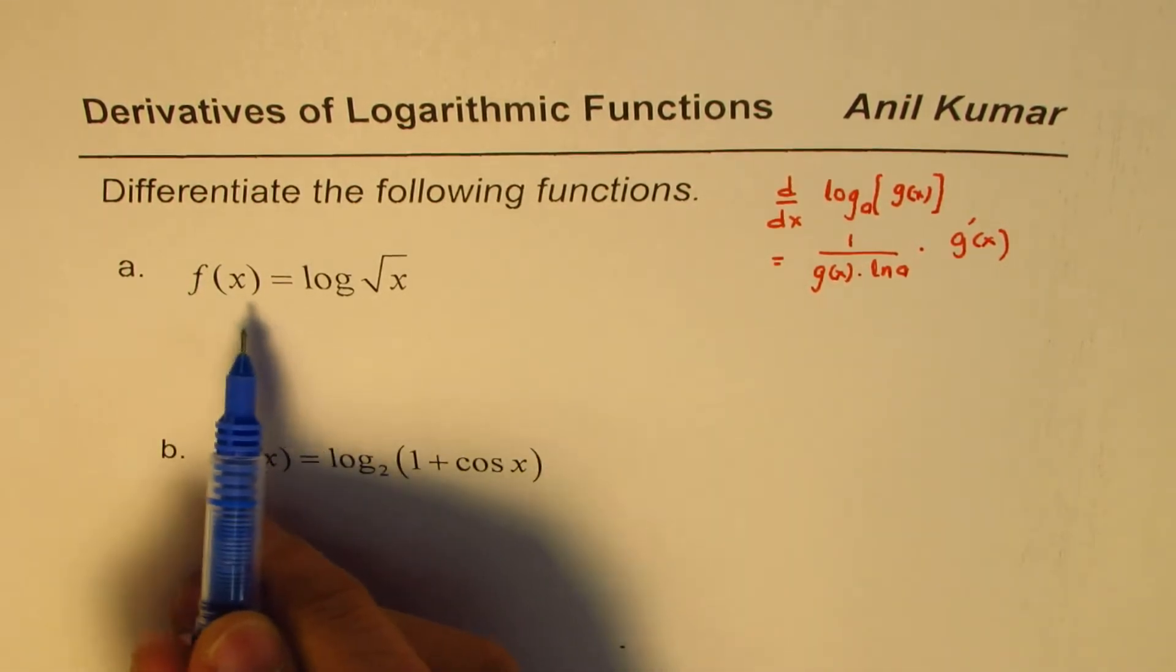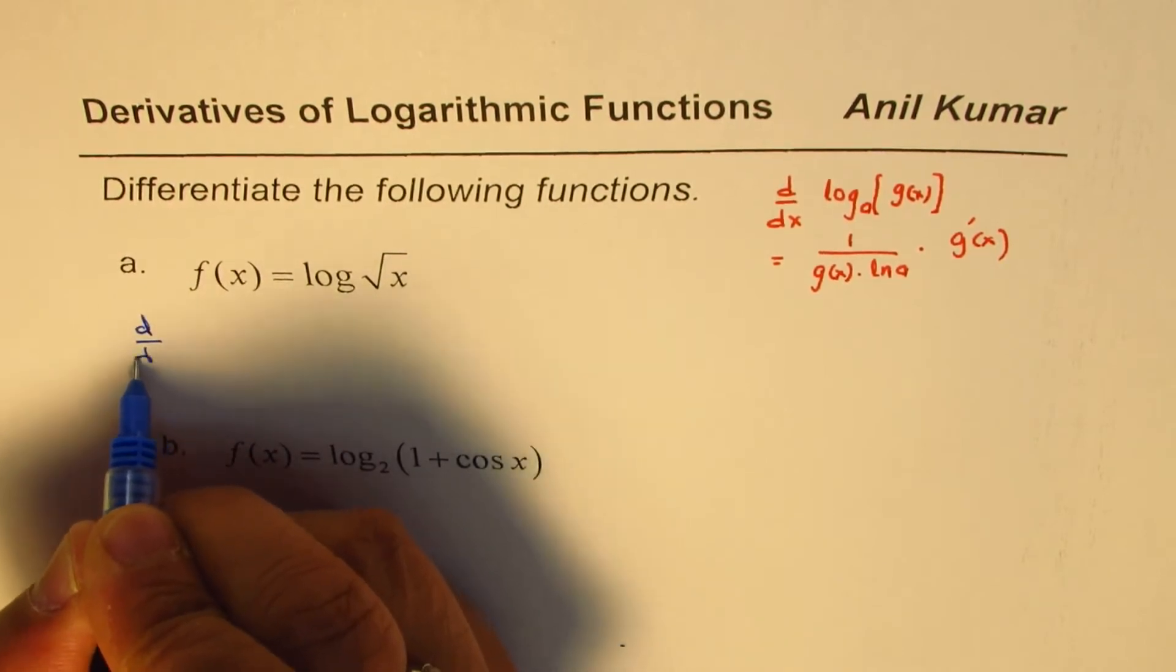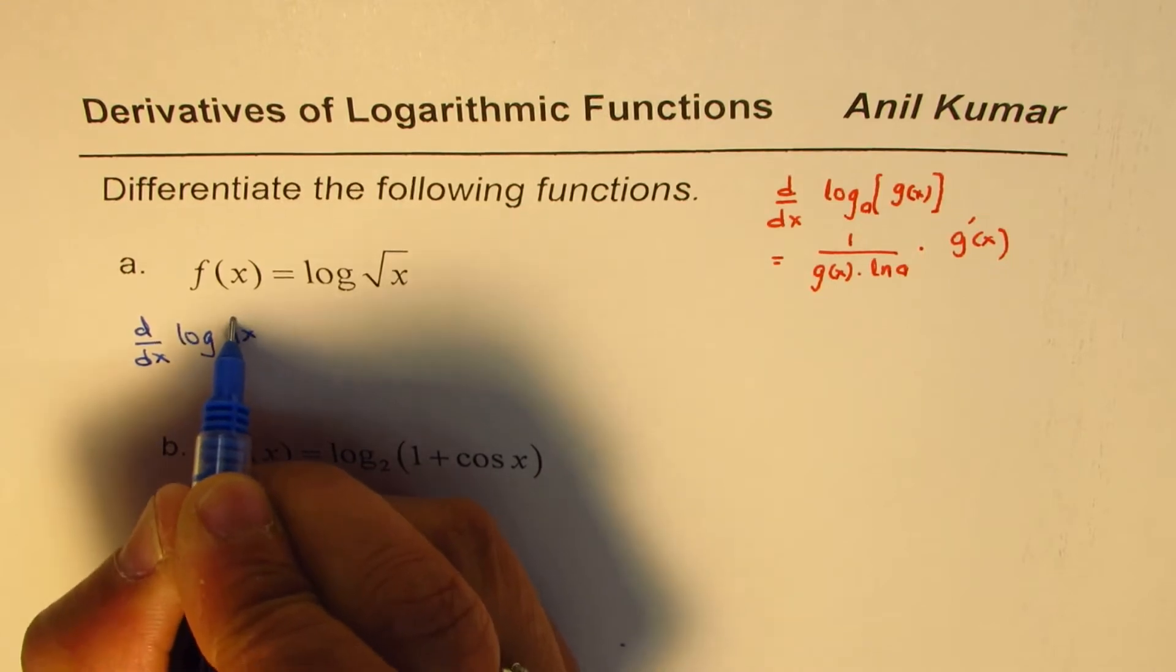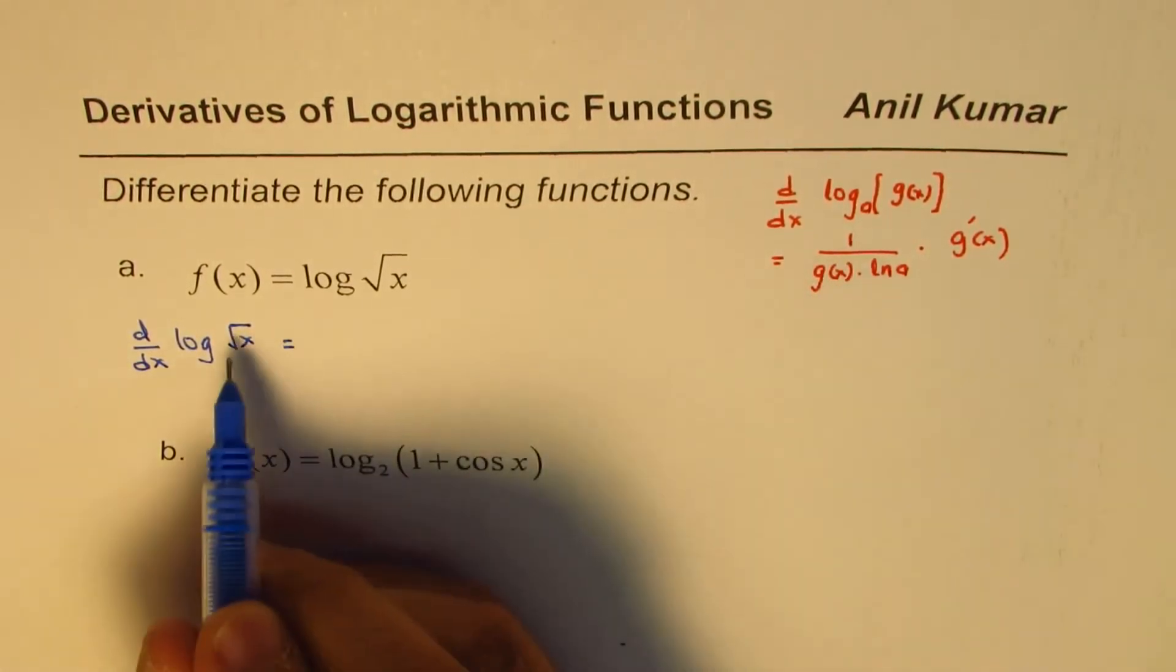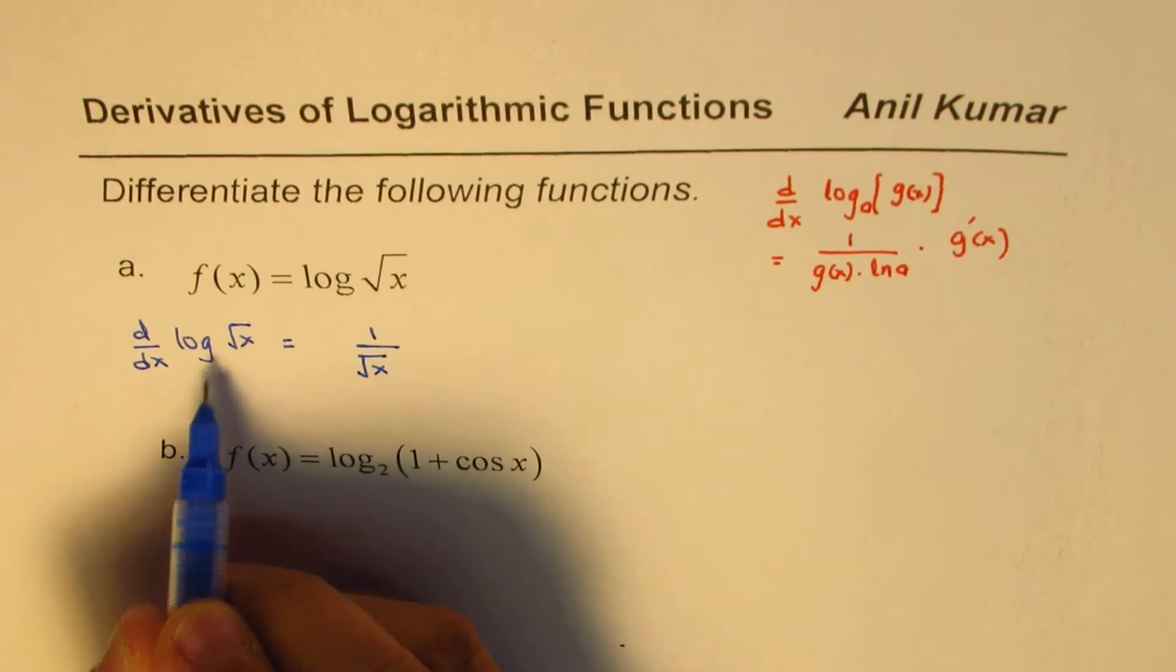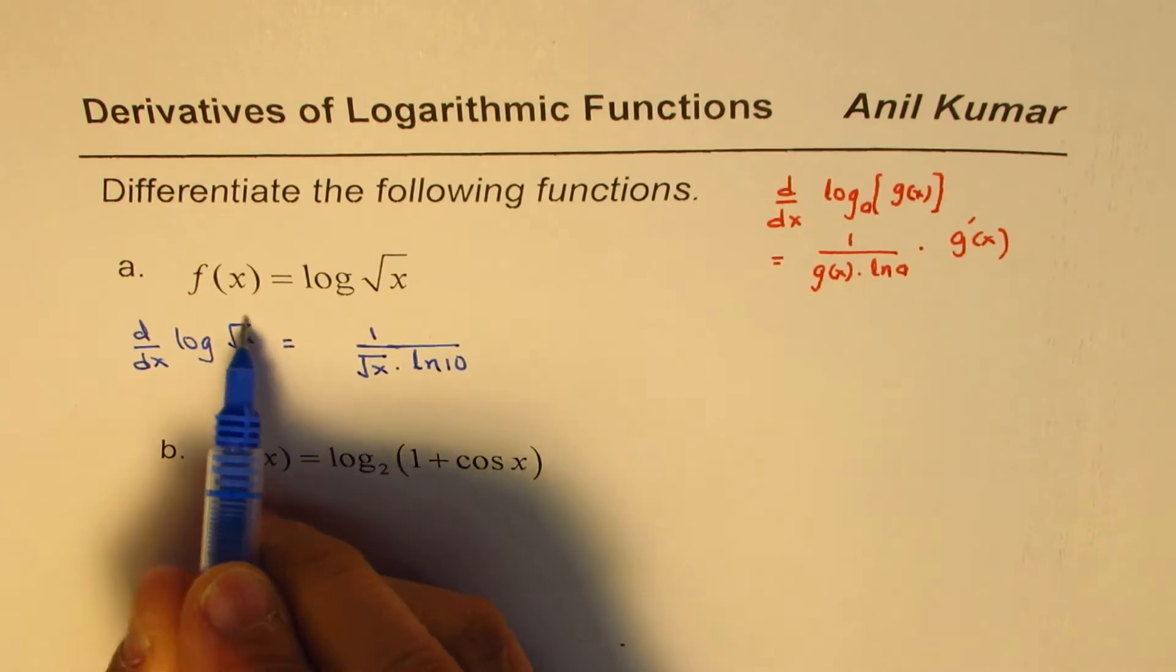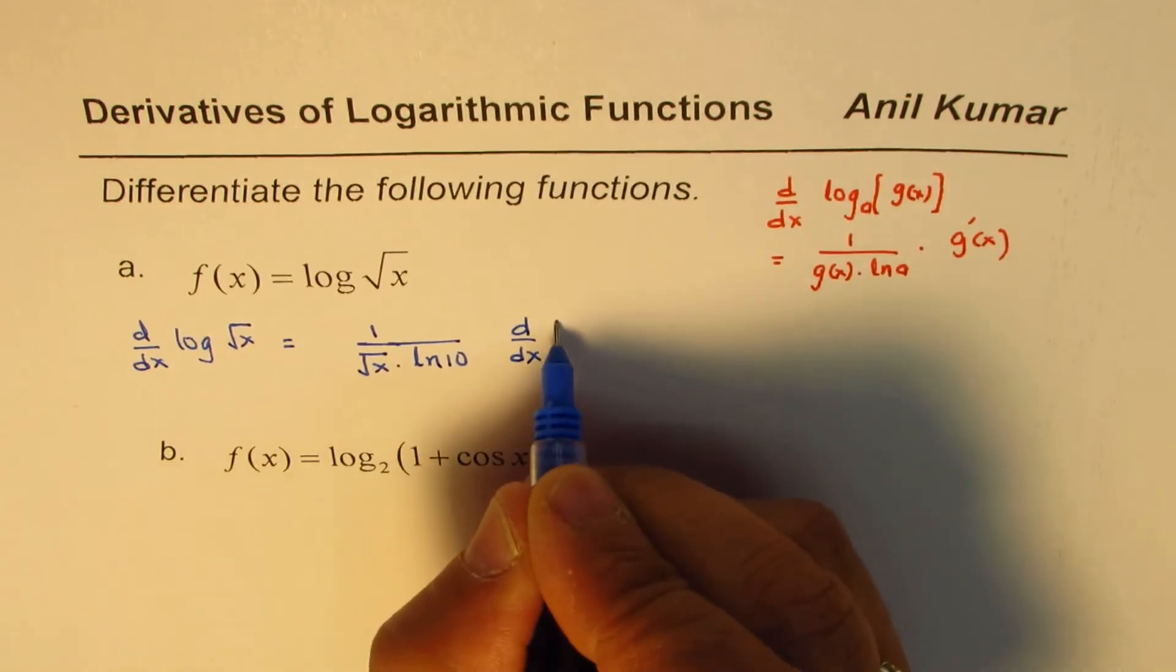So, the derivative of this function, we can say d/dx of log √x will be equal to, applying this formula, the function is square root of x, so you get 1 over √x. The base here is 10, so we get ln 10, times the derivative of square root of x. So, let me write this as d/dx of √x.